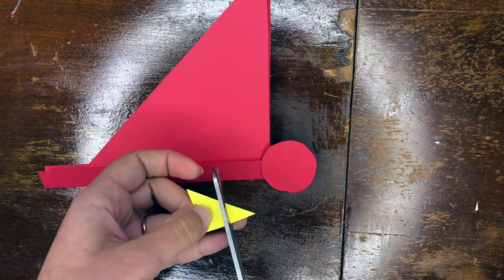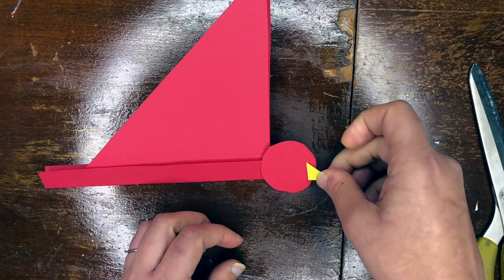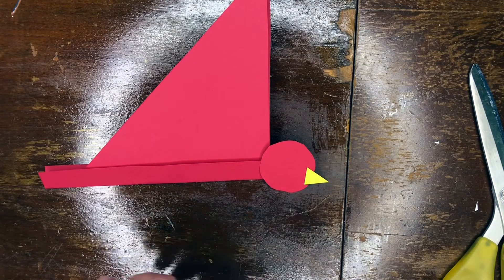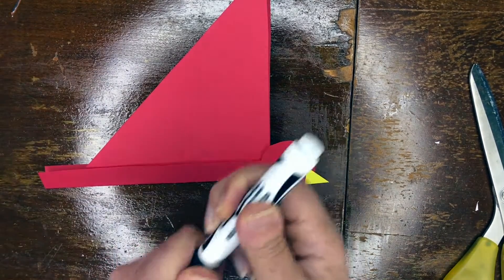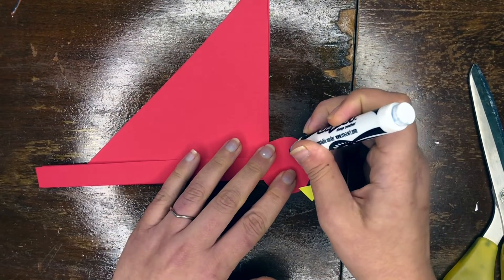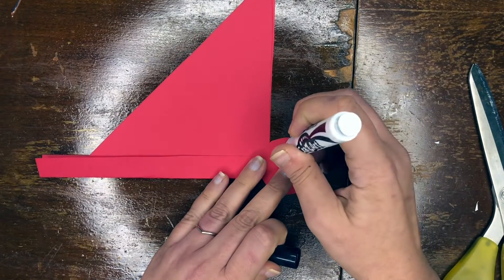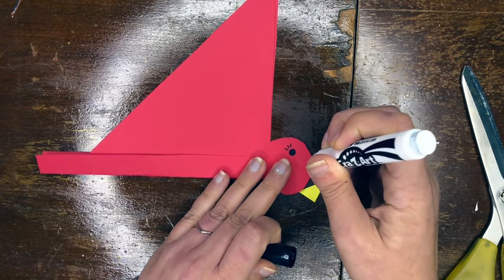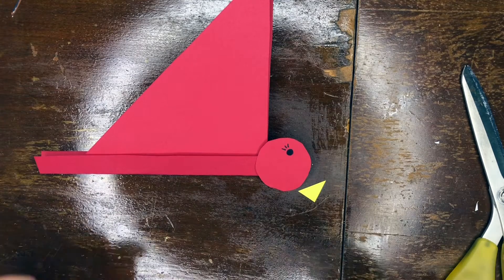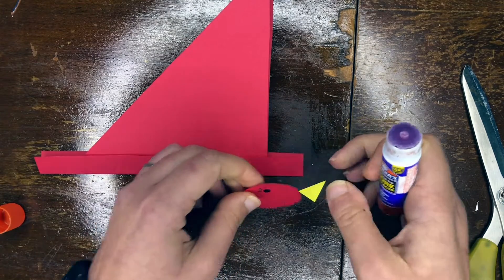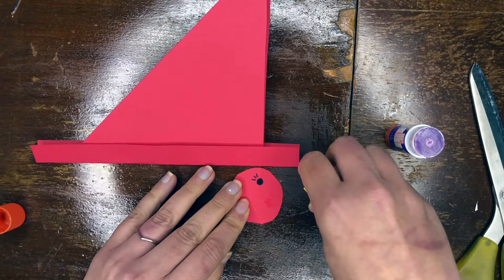I had a scrap of yellow, so I'm going to use yellow for my beak. And then I'm going to draw on some eyes and a couple eyelashes too. I'm going to put some glue on the face for the beak.